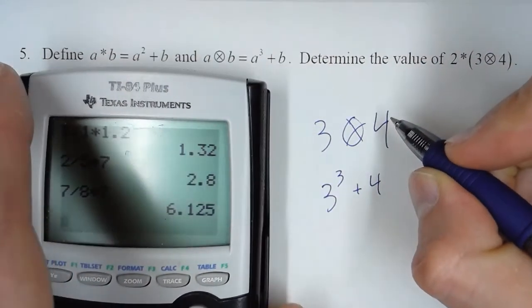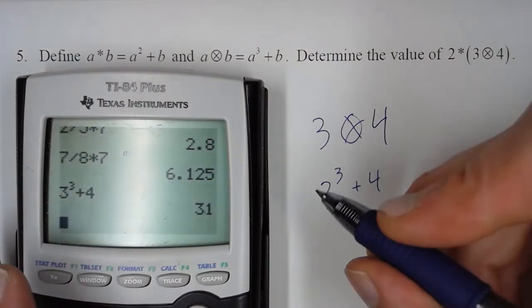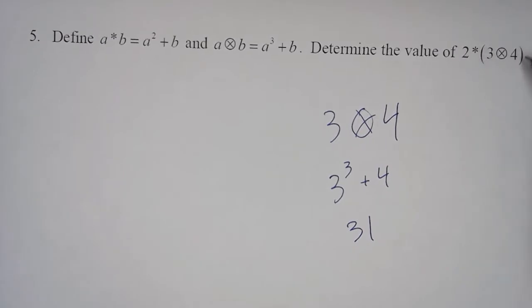So 3 cubed plus 4 is 31. So this whole expression right here is equal to 31.